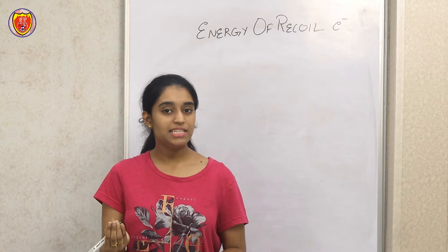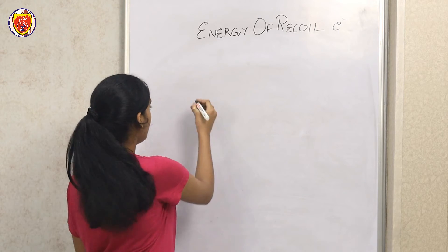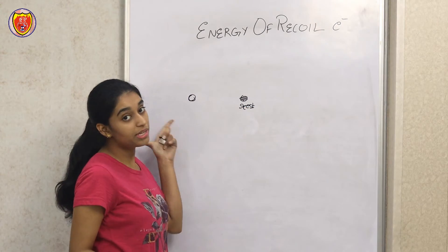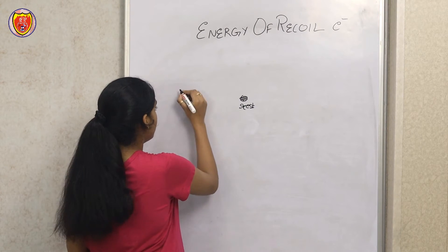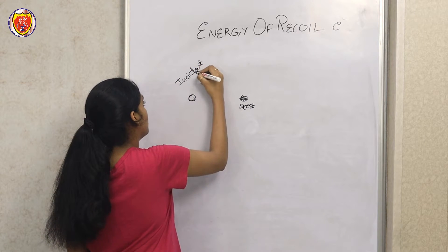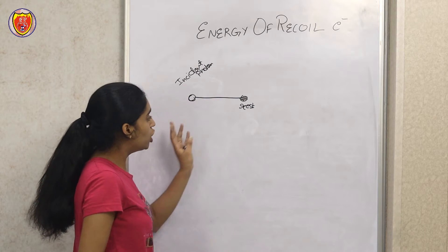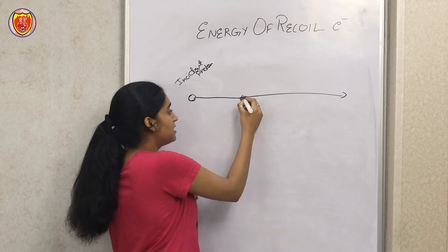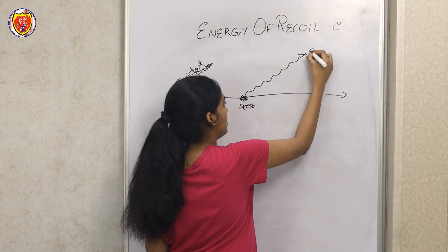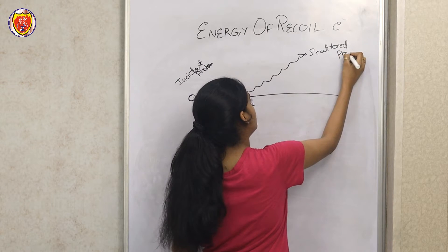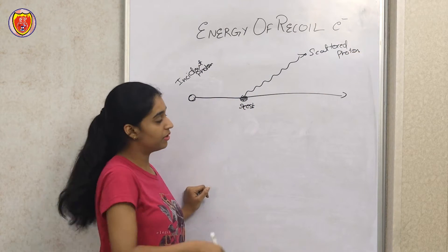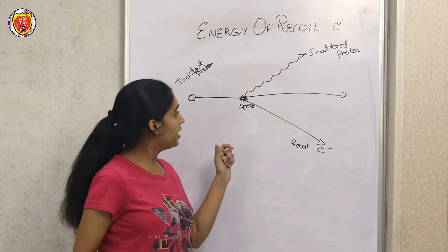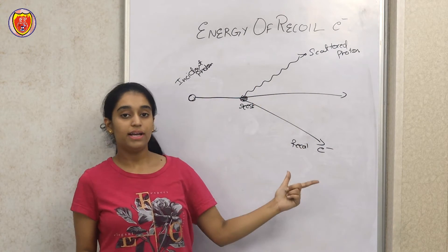In the Compton effect, there is an incident photon and an electron. The electron is initially at rest. When the incident photon hits the target electron, scattering occurs — the photon is scattered and the electron recoils. The scattered photon goes off at some angle, and the recoil electron goes off at another angle.